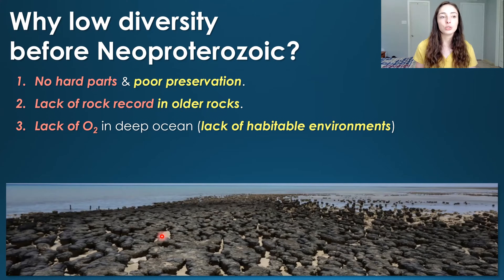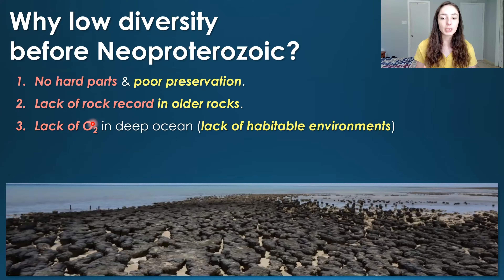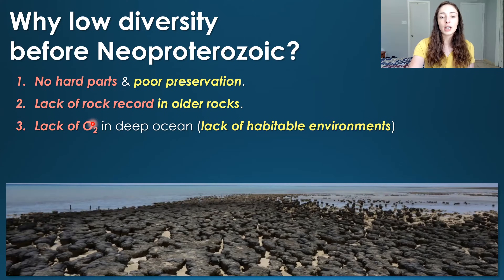The lack of actual diversity might have been due to a lack of habitable environments because there was a lack of oxygen in the deep ocean. The great oxidation event happened around 2.4 to 2.2 billion years ago, but that was mainly the oxidation of the atmosphere and surface oceans, not the deep oceans. For about a billion to a billion and a half years, the deep ocean remained anoxic and pretty sulfidic — pretty toxic to eukaryotic-type life — decreasing the habitable seafloor where eukaryotes eventually did diversify.